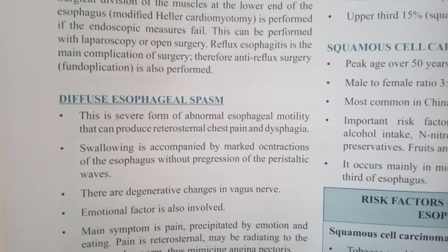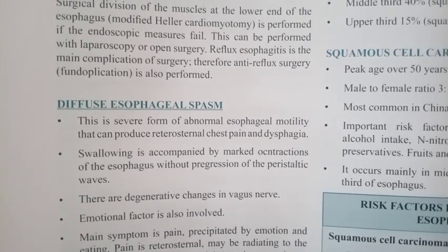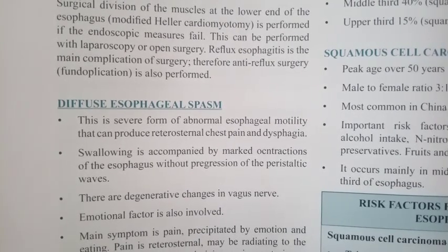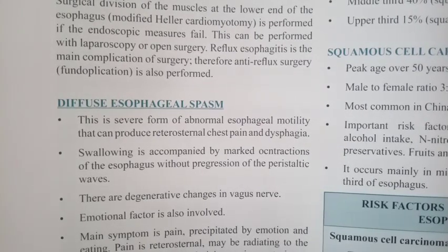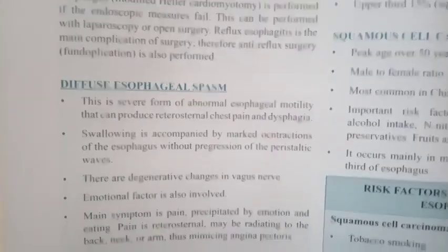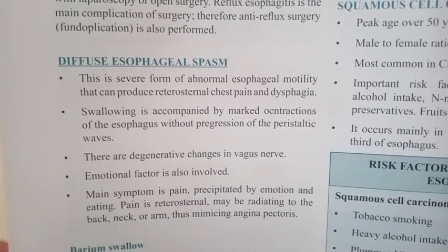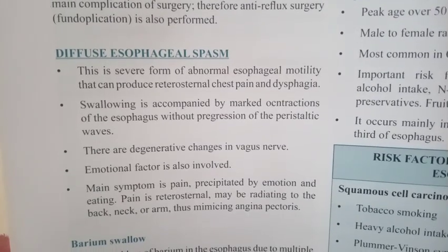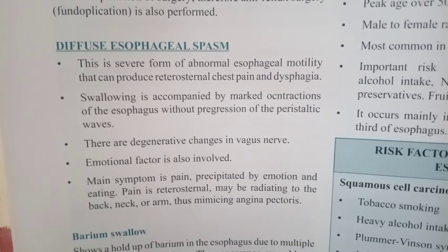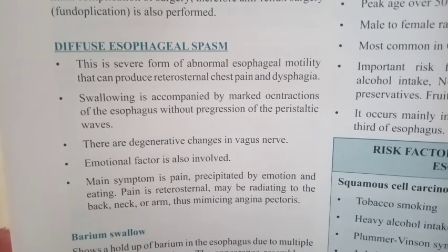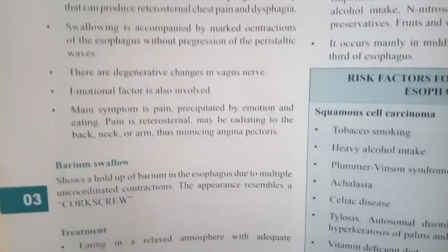Diffuse esophageal spasm: this is a severe form of abnormal esophageal motility that can produce retrosternal chest pain and dysphagia. Swallowing is accompanied by marked uncoordinated contraction of the esophagus without progression of peristaltic waves. There are degenerative changes in the vagus nerve. Emotional factors are also involved — pain may be precipitated by emotion and eating. Pain is retrosternal and may radiate to the back, neck, or arm, thus mimicking angina pectoris.